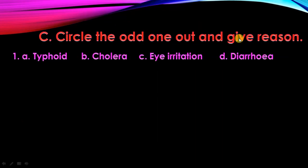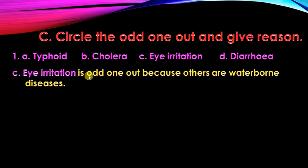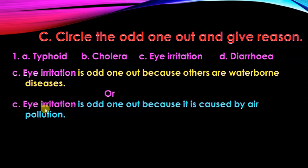C part: circle the odd one out and give reason. A — typhoid, B — cholera, C — eye irritation, D — diarrhea. The odd one out is C, eye irritation, because the others are waterborne diseases. You can also write: eye irritation is odd one out because it is caused by air pollution.